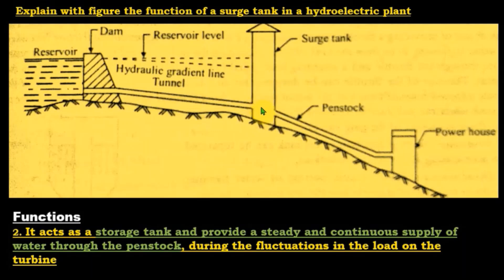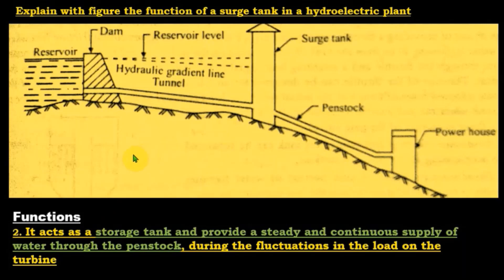Here we have the powerhouse, the penstock, and the underground water channel taking water from the reservoir, then through the penstock to the powerhouse. In between, the surge tank is installed vertically. The surge tank minimizes or even eliminates pressure variations due to velocity variations resulting from the sudden closure and opening of valves.